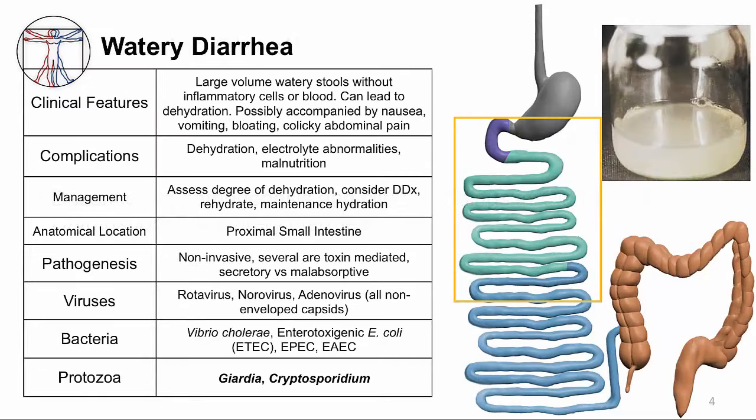Here's the summary table for watery diarrhea. Remember that the anatomic location affected in watery diarrhea caused by bacteria and viruses is the proximal small bowel, and this is also true for protozoa. Similar to bacteria and viruses, watery diarrhea caused by protozoa can be an acute illness that self-resolves. In contrast, some protozoa can cause a chronic diarrhea, and in some patients the illness can be life-threatening.